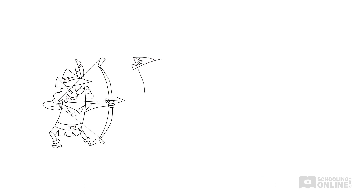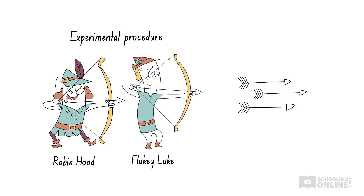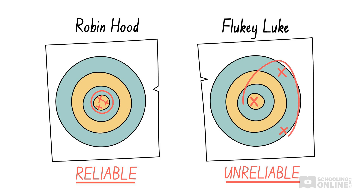This works the same way as reliability in science. The archers represent the experimental procedure that we performed, while the arrows in the target represent the experimental data we obtained. If the experimental procedure is reliable, like Robin Hood, then the results will be close to each other. However, if the experiment is unreliable, like Fluky Luke, then the results will be all over the place.